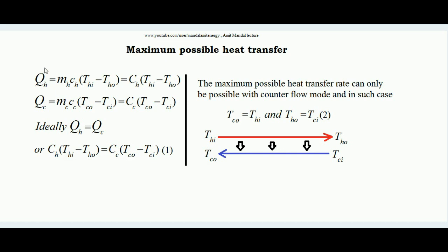The heat rejected by the hot fluid is Q_H = m_H · C_H · (T_HI − T_HO). The product m_H · C_H can be written collectively as capital C_H — the heat capacity of the hot fluid. Similarly, the heat absorbed by the cold fluid is Q_C = m_C · C_C · (T_CO − T_CI), where m_C · C_C is written as capital C_C, the heat capacity of the cold fluid. Whatever heat is rejected by the hot fluid is absorbed by the cold fluid.